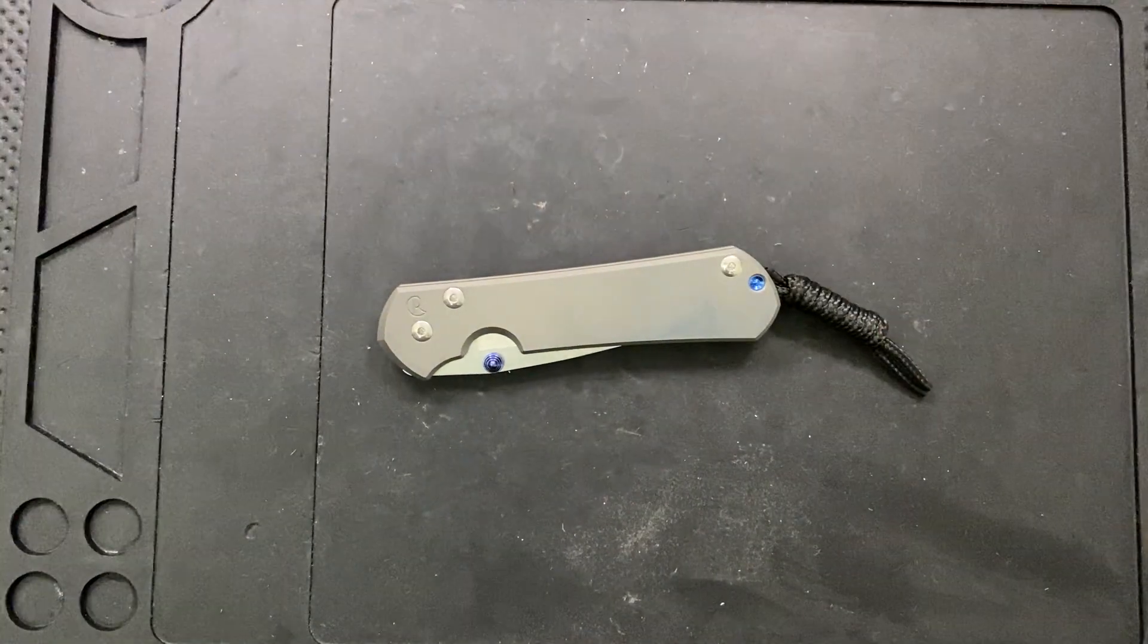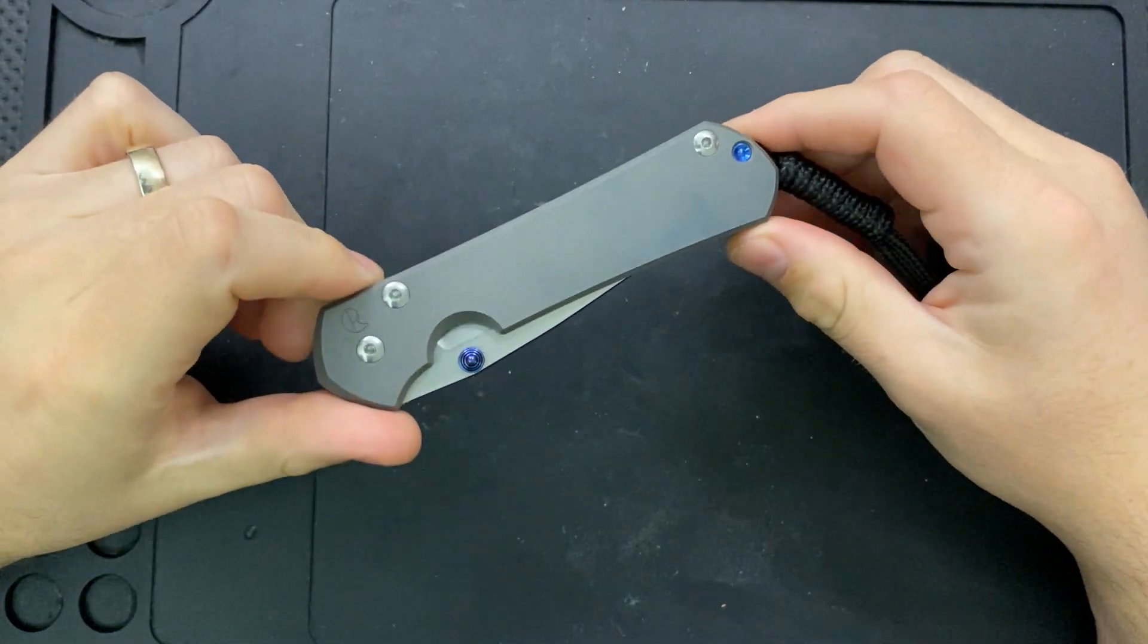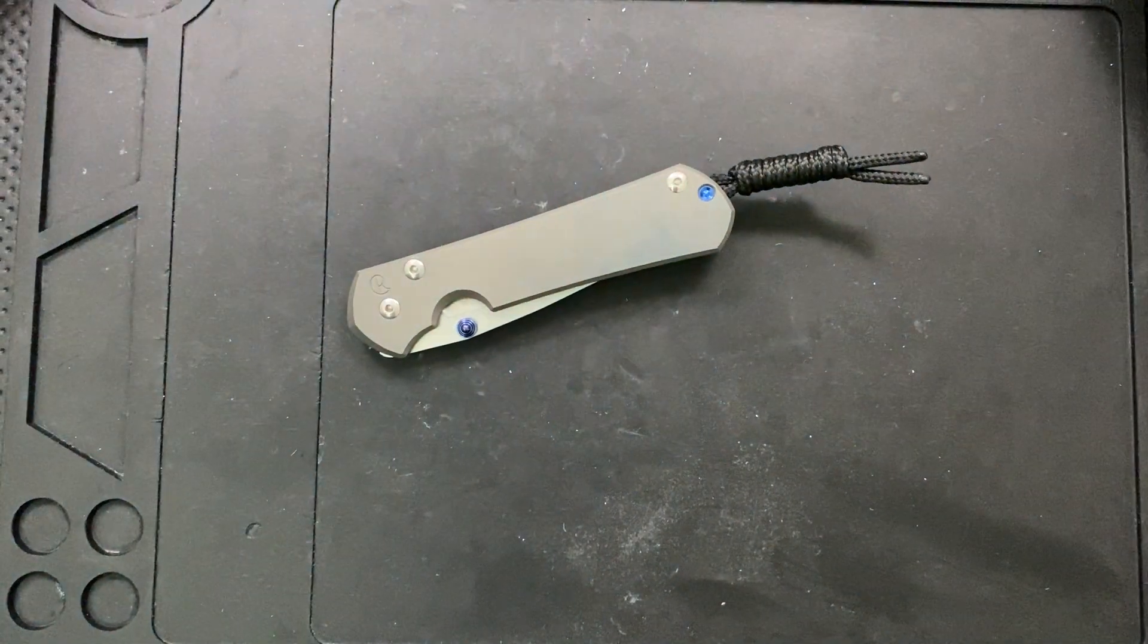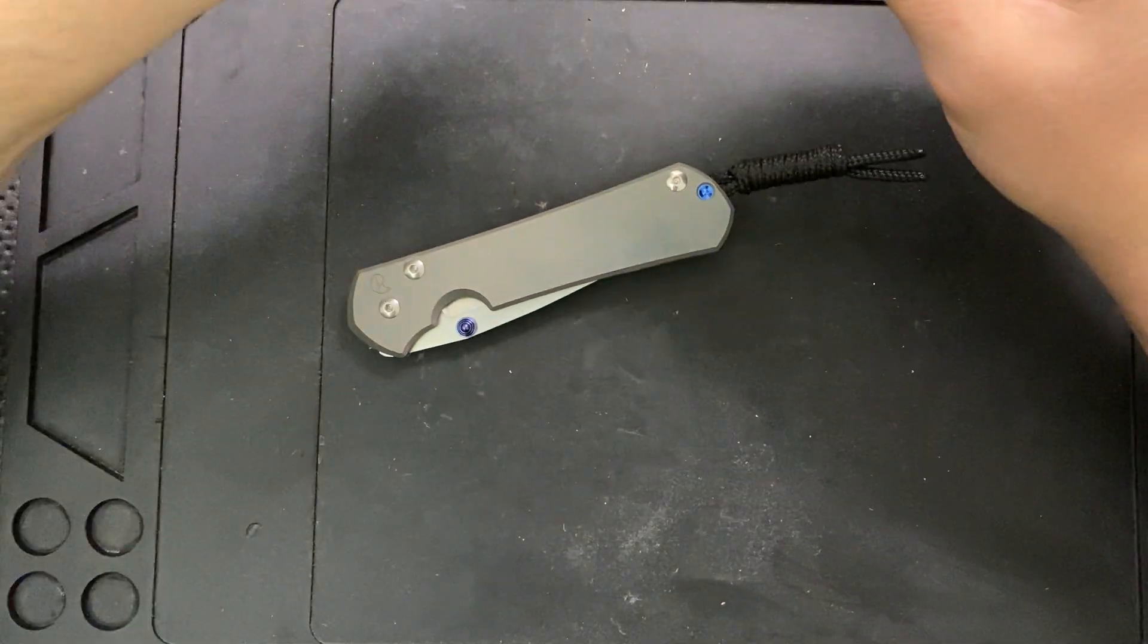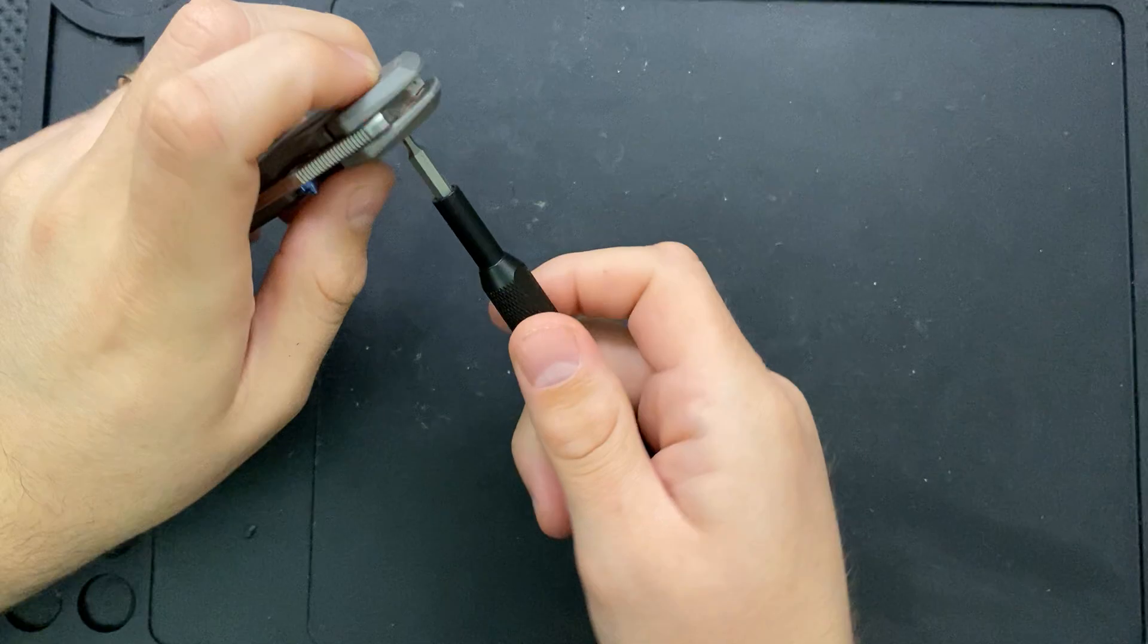Hey everybody, Nick here, and today I got a bit of disassembly to do for you of this little guy right here. This is the Chris Reeve Knives Sebenza number 31. Very interesting piece, although in some ways, actually not all that interesting. In some ways, it's just another damn Sebenza.